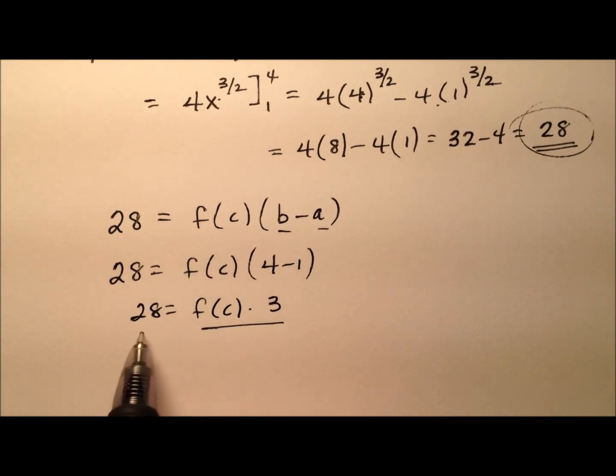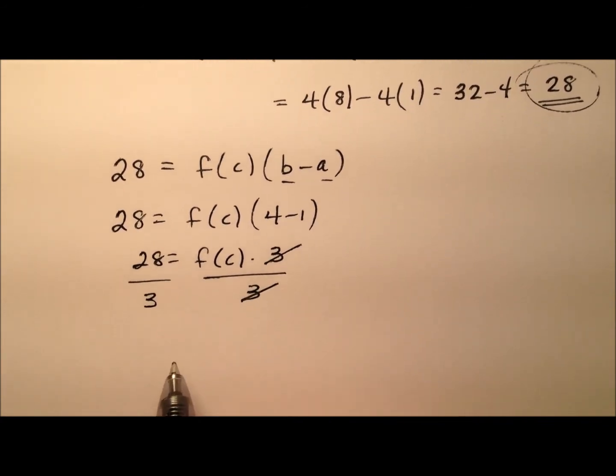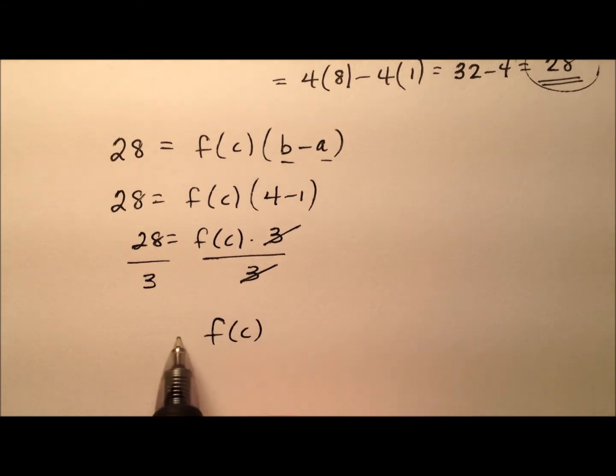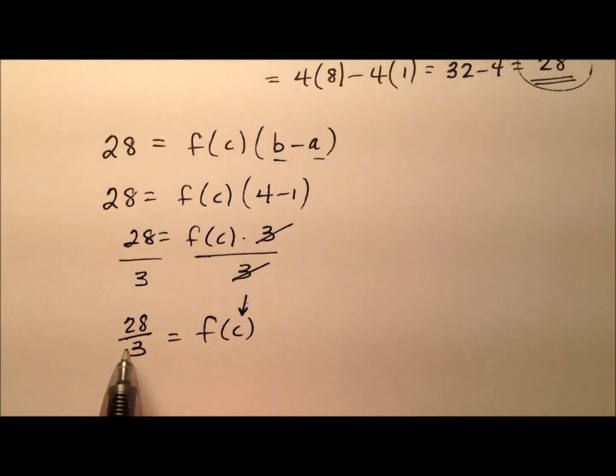When I divide both sides of this equation by 3, my f of c is 28 thirds. So once again, the mean value theorem is guaranteeing the existence of this c value.